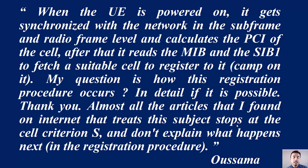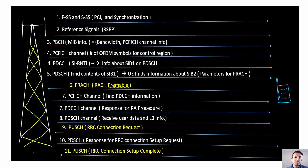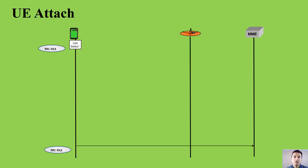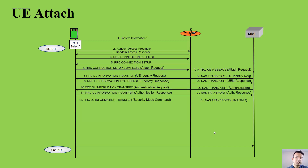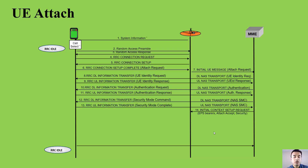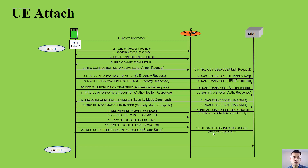Most sources, even in textbooks and resources, show the attach procedure from the perspective of the RF side — what happens on the RAN side between UE and eNodeB, what channels are involved, and how UE gets connected. Some resources also give a hint on the core network. However, combining both RAN side and core side together with all the messages can be a daunting task and can increase a lot of information on the screen.